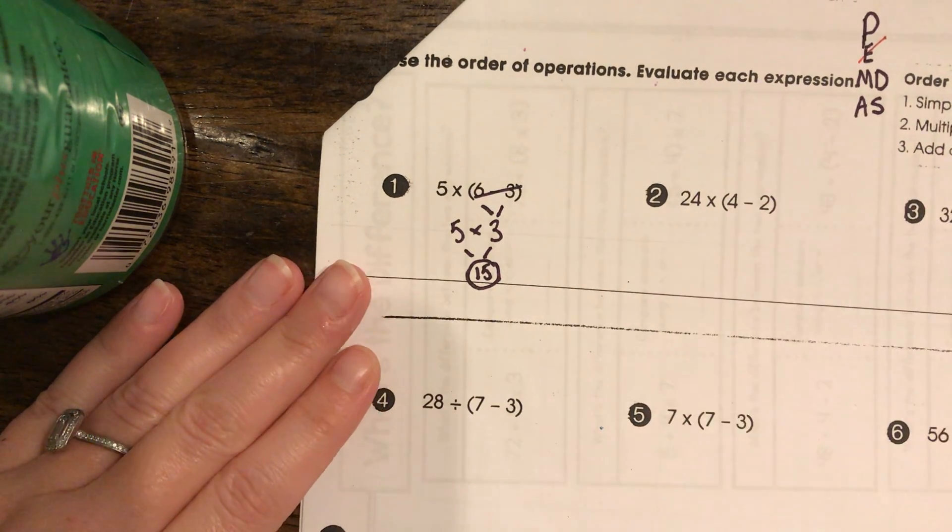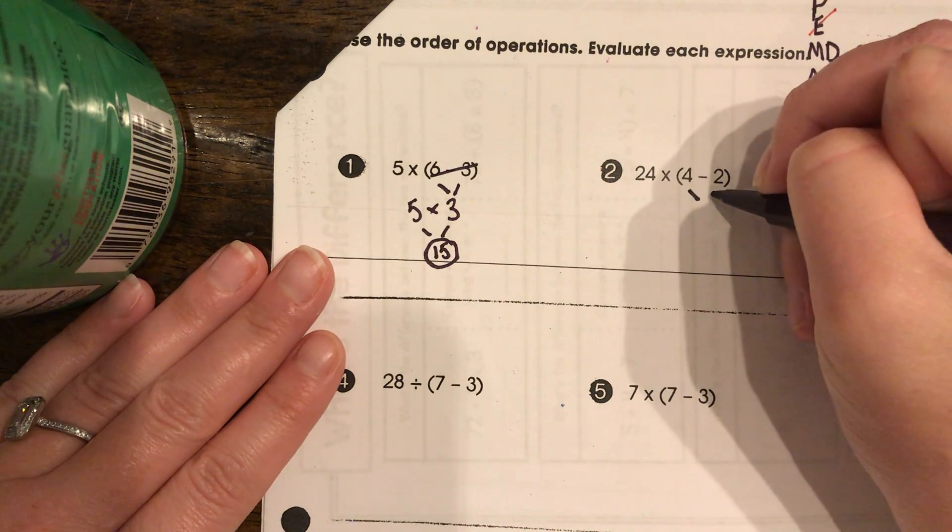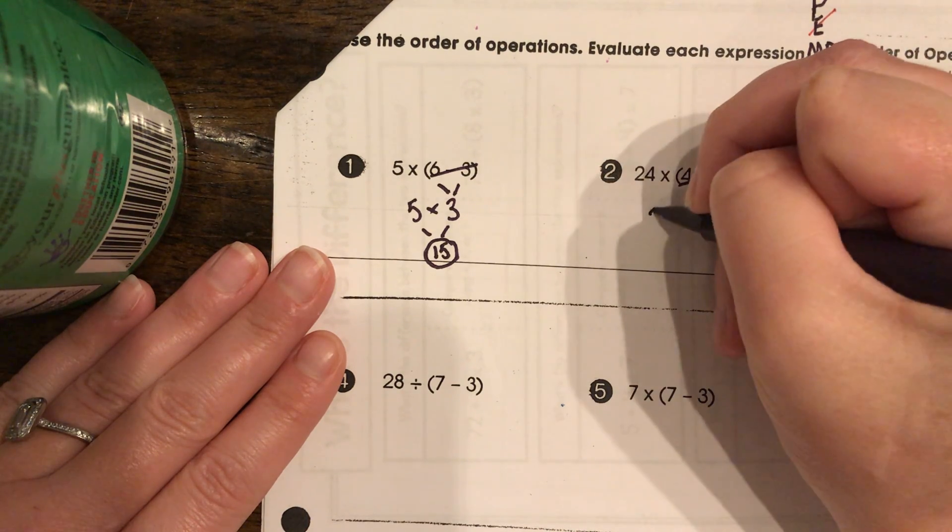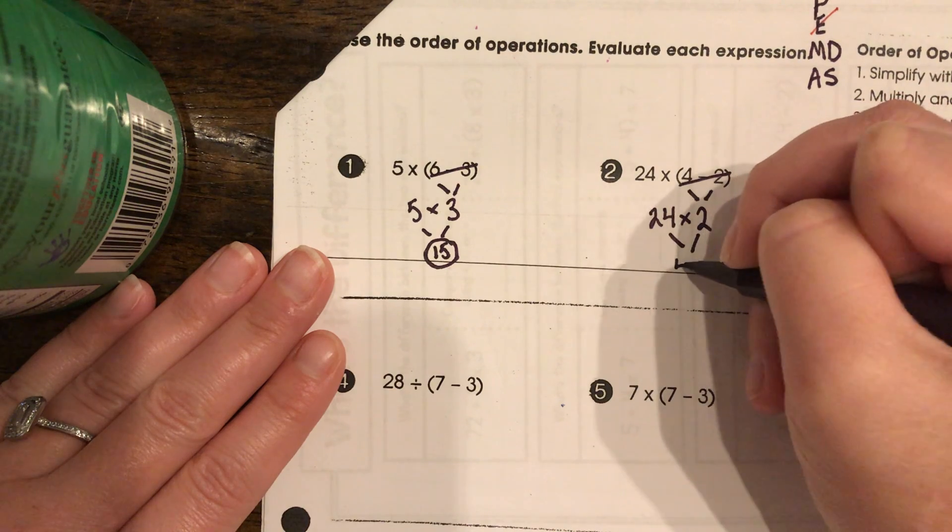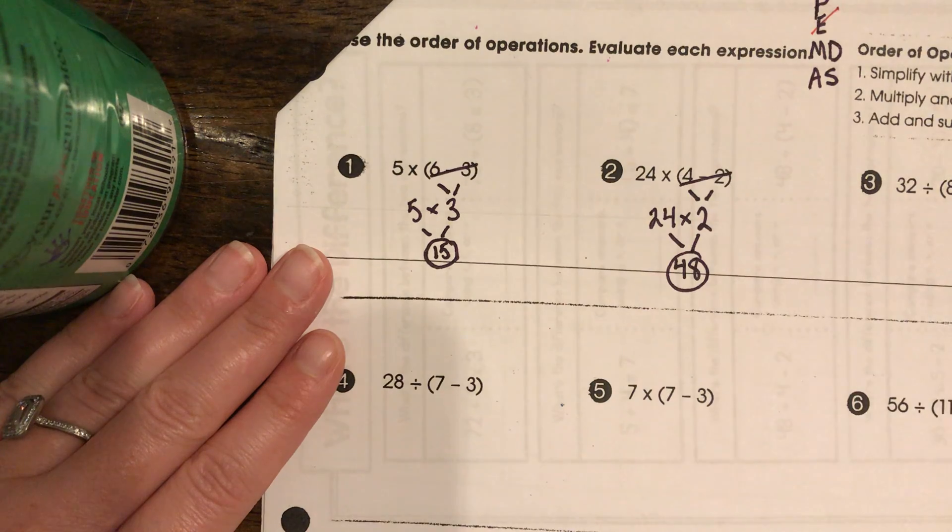Now, here we are, next one, step number two. First is the parentheses, four minus two is two. Then cross that out, and you've got 24 times two is 48, and you draw your circle around it to make your garlic sauce.